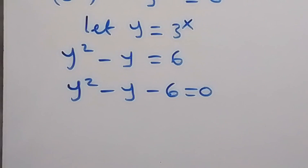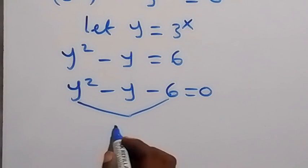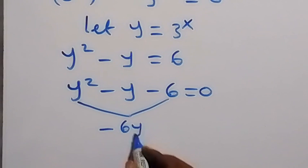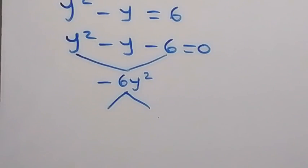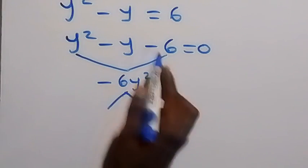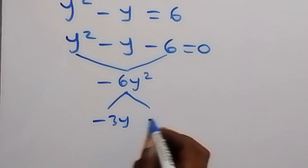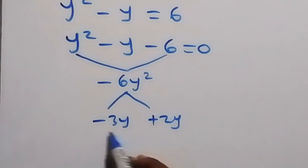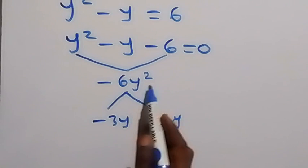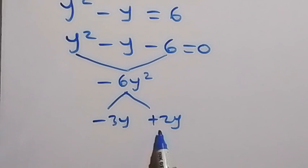Of course, we should be able to factorize here. So when we multiply these, we have minus 6y square. Then we break it down into two factors such that the sum of the factors will give us minus y. So we have minus 3y plus 2y. The product of this is minus 6y square, and the sum is minus y.